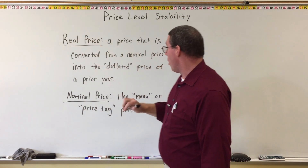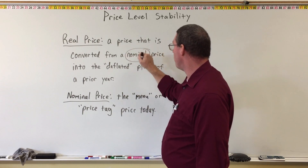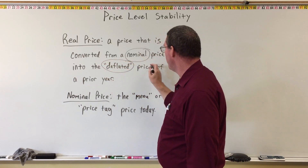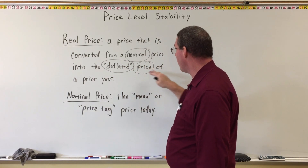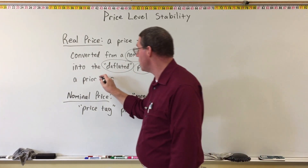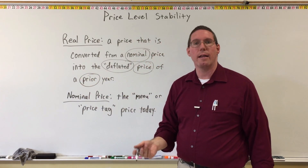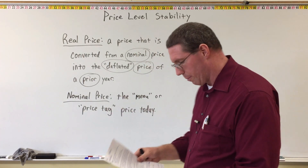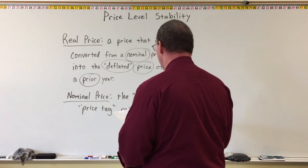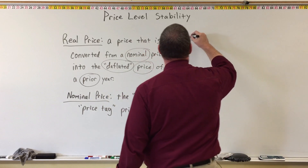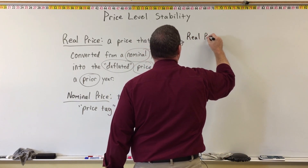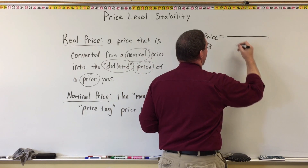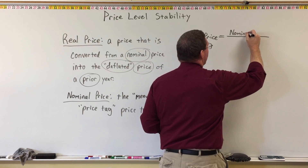So a real price is where you take the nominal price today and you deflate it — you reduce the nominal price to a lower price of what that product would have been in a prior year. The way that you do that is by using the inflation rate, or really what you're using is the CPI. Here's your formula for deflating or identifying the real price. The real price of a product is equal to — it's a fraction.